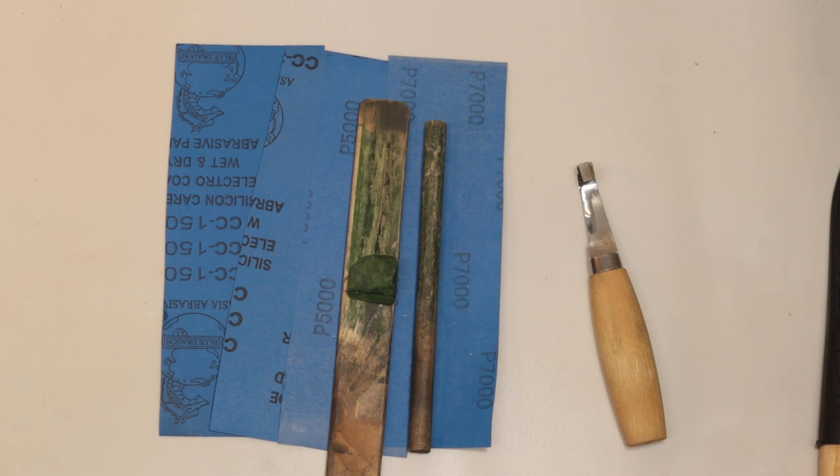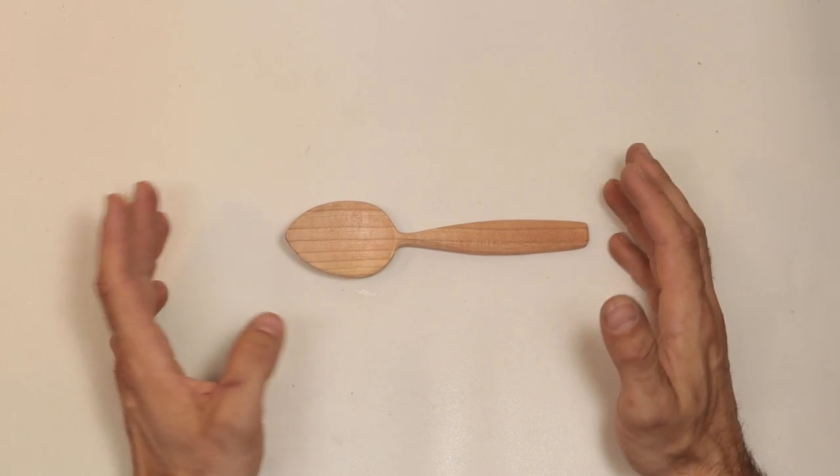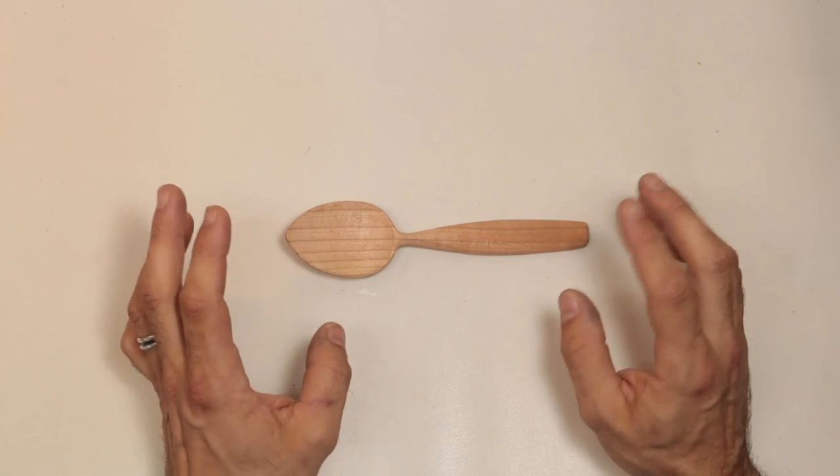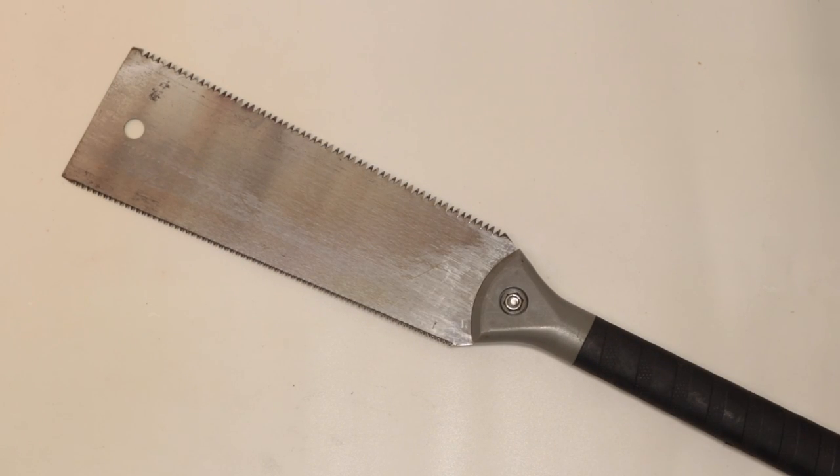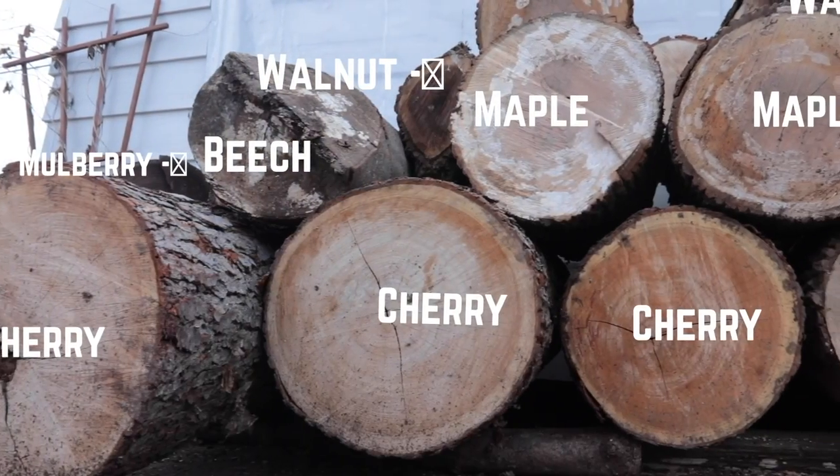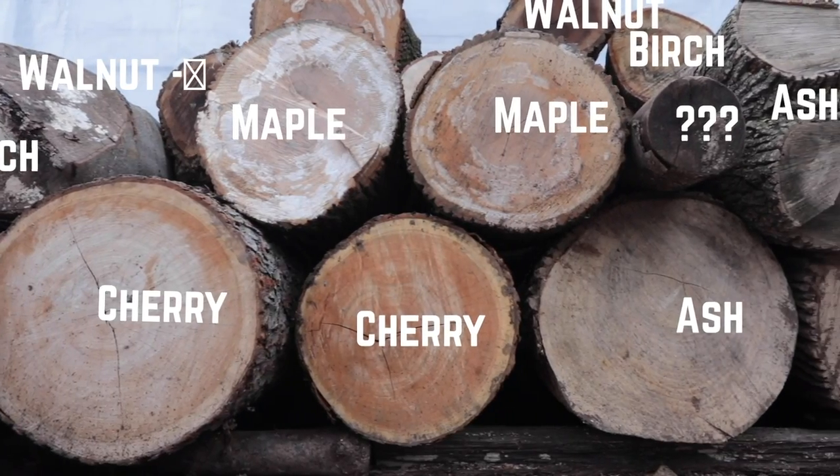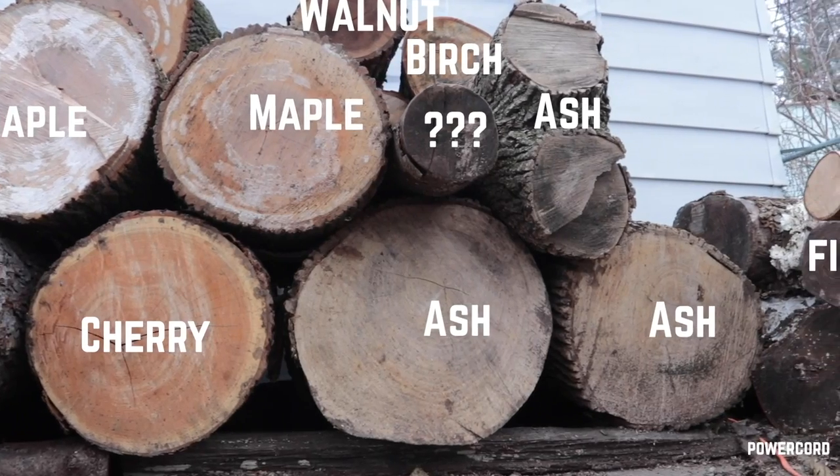Either you've carved a few spoons and you want to broaden your capabilities, or you're confident that spoon carving is something you want to take a deep dive into. Here's what to add to the basics. The first thing that you're probably going to want is some sort of saw. This is a Japanese style pull saw, but any sort of crosscut saw or pruning saw is needed. One of the many great things about spoon carving is that the raw material literally grows on trees.